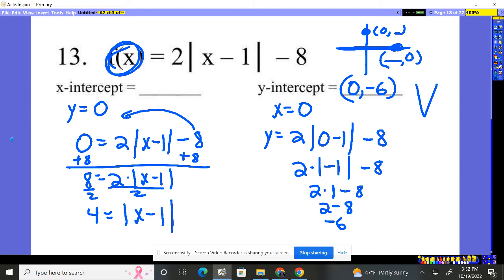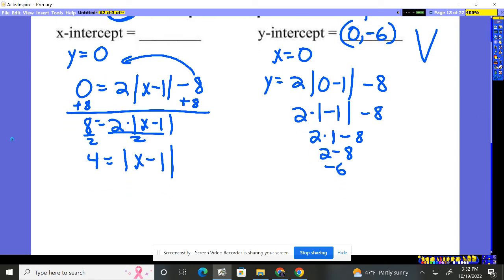I now have 4 is equal to the absolute value of x minus 1. Now, we need to solve this. Do we remember how to solve it? Well, if you think about it, the absolute value of what gives you 4?